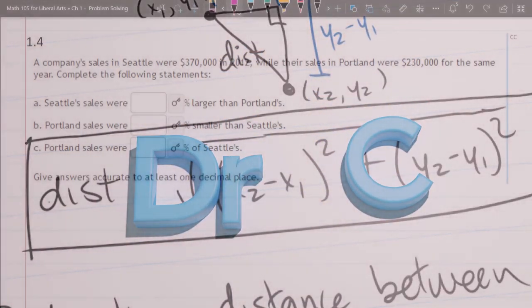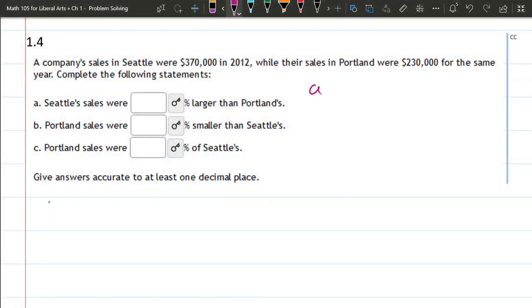Any of these comparison problems, we're always going to have to compute the absolute difference or absolute change. And that's going to be the absolute value of big minus small.